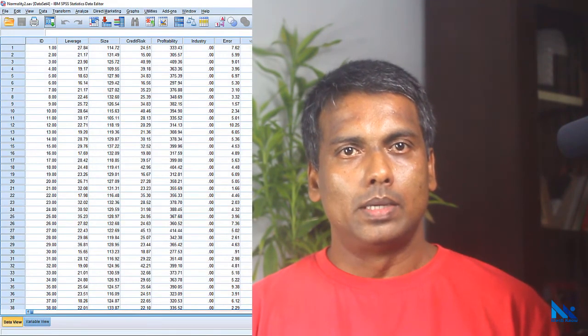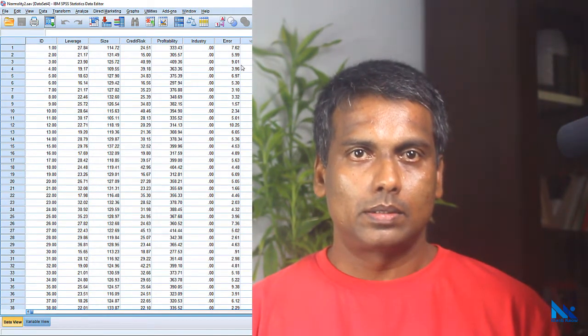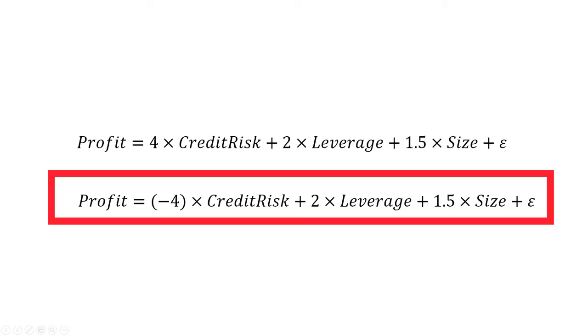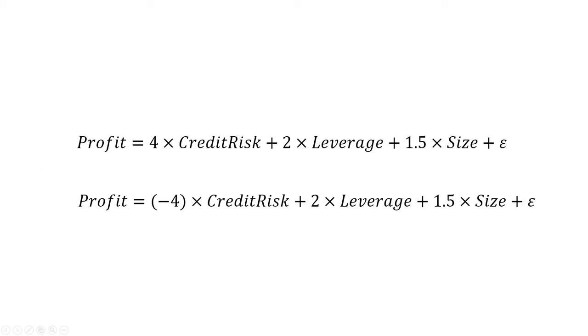Another very common reason for the violation of the normality assumption is high diversity in the sample — in other words, the sample may not be homogeneous due to some uncontrolled factors. In this case we can either divide the dataset into homogeneous subsets or exclude heterogeneous observations from the regression analysis. For example, I have fabricated this dataset so that for the first 75 observations the regression model is one form, and for the rest of the 75 observations the regression model is different — the effect of credit risk is different in the two groups: positive in one and negative in the other.